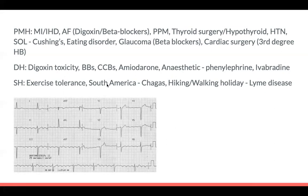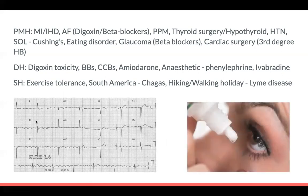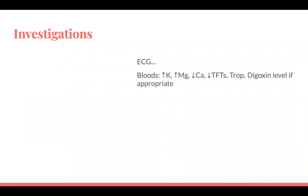This is an example of digoxin toxicity on ECG: downsloping ST depression, the reverse tick in lead II, and you can develop short QT as well as bradycardia. For investigations: look for electrolyte abnormalities — hypokalaemia, high magnesium, low calcium can all cause bradycardia. Check TFTs for hypothyroid, troponin for MI, and digoxin levels where appropriate.